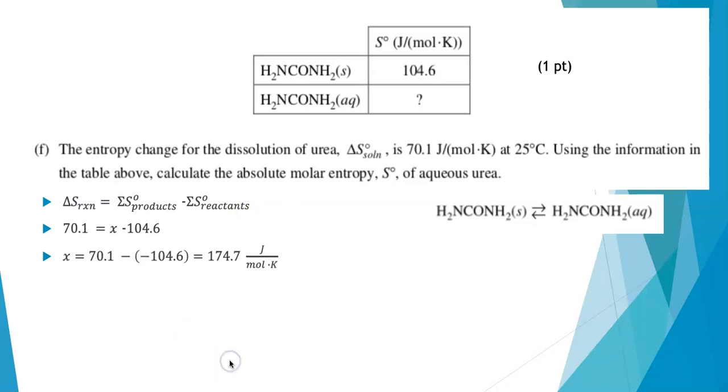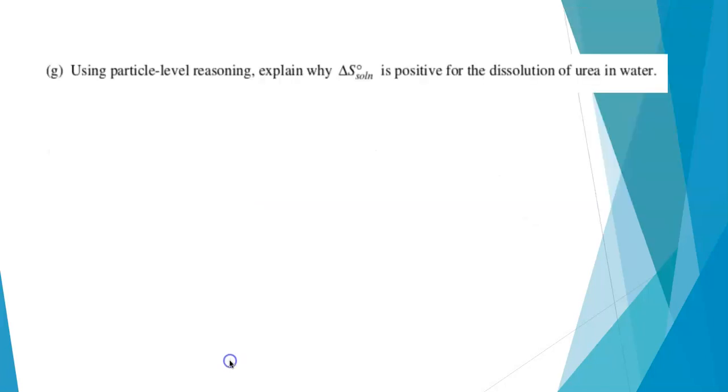And so we plug that in, and we get an answer of 174.7 joules per mole per kelvin. So I'm just doing some very simple algebra and solving for the piece that I don't know. And because it's a state function, I can do this. Great. Let's go on to the next part of the question.